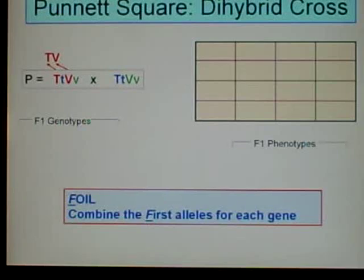So FOIL, the F means combine the first alleles for each gene. So the big T is the first allele for the first gene. The big V is the first allele for the second gene. You combine those, you get big T, big V.